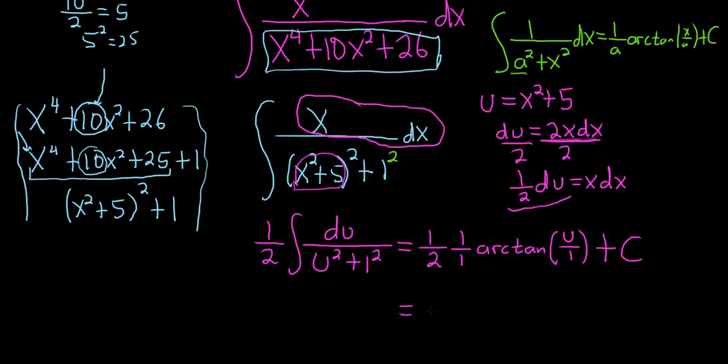This will be equal to 1 half, arc tangent, and then u is simply x squared plus 5. So this is x squared plus 5. Then we have our capital C. And that should be the final answer.